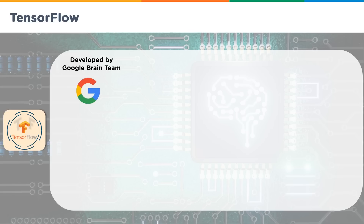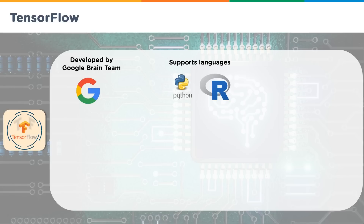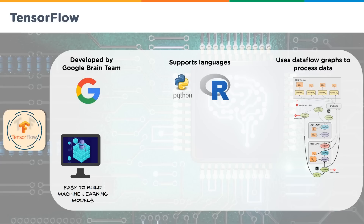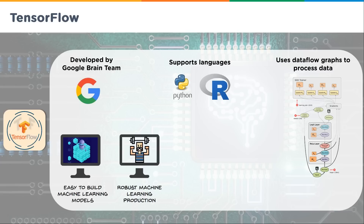TensorFlow was developed by the Google Brain Team. It supports both Python and R — Python is probably one of the biggest players in data science and neural networks across all the packages. You can set up an interface into Java and other languages, but it was designed with very high functionality in Python and R. It uses dataflow graphs to process data, which lets you see how data flows through the neural network. They're easy to build into machine learning models and robust machine learning production.